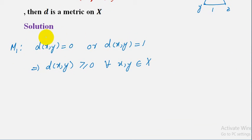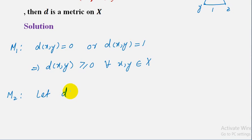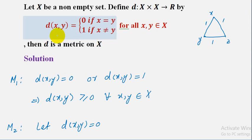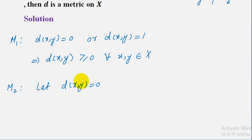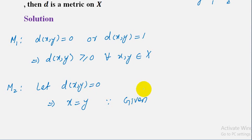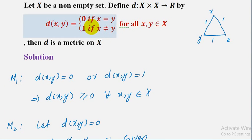Now we check the second condition, M2. For this, let d(x,y) = 0; then we prove that x equals y. As given, when d(x,y) = 0, this implies x equals y, since that is given in the definition of this relation. So this condition is satisfied as stated in the definition.